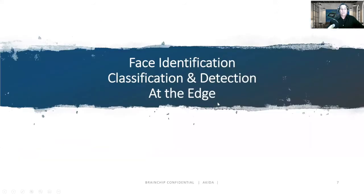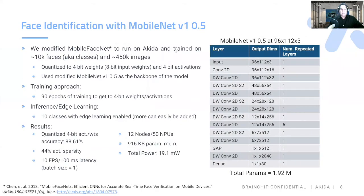This is true edge learning where it's actually learned and the neurons are using that without a loss of accuracy. The final demonstration we're going to do is face identification and classification at the edge. We're using a MobileFaceNet to run on Akida — 450K images it was trained with, quantized to 4-bit weights and activation. We used edge inference learning with 10 classes with learning enabled at the edge — more can be added if you want. The result accuracy is 88.61, with 44% sparsity because of the inherent sparsity in the design, which is one of the reasons we have lower power. 10 frames per second at 100 milliseconds latency, only using 12 nodes or 50 NPUs, about 900 kilobytes of memory, and a total power of 19 milliwatts.